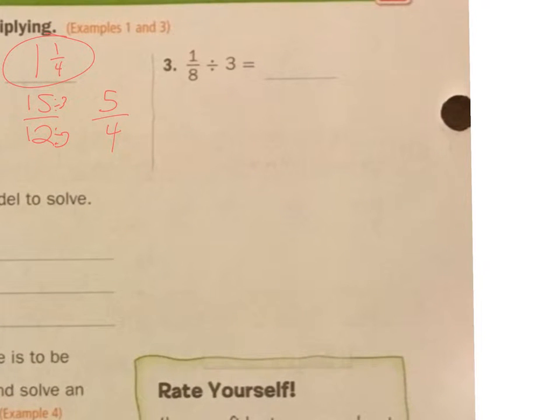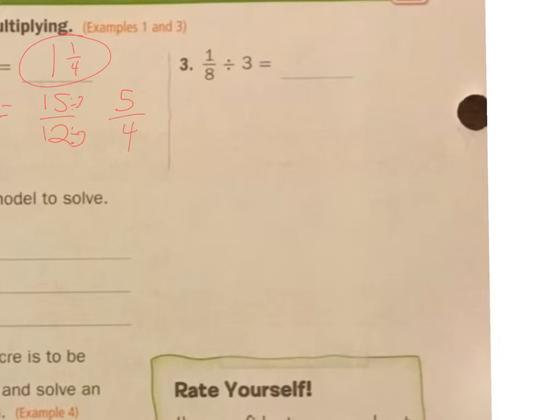Let's do this next one. I need to make this into a fraction so I can do the keep, change, change. Keep the 1 eighth, change that, and then change that. 1 times 1 is 1, 8 times 3 is 24, so my answer is 1 over 24.